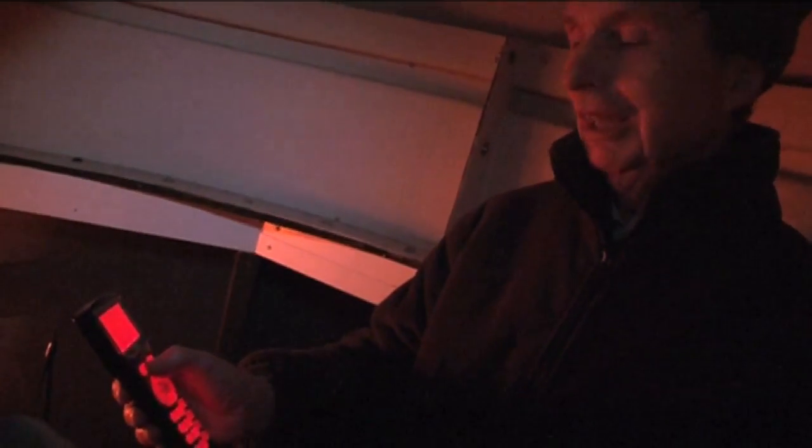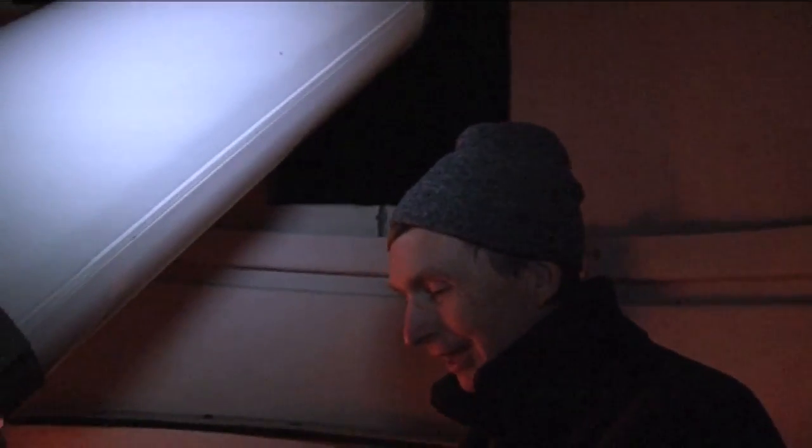So the telescope is now pointing to a well-known bright star Enif in the constellation of Pegasus. And I'm going to sink to target, which means I'm going to tell the telescope that it's pointing at Enif. And then the telescope can find Messier 15. So here we go. The telescope is going to swing again now. See, not far. It only had to swing a very few degrees. And that should have brought the Messier object into view.